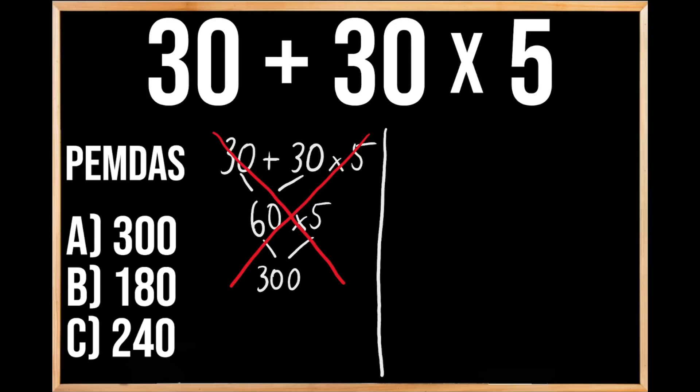So our problem was 30 plus 30 times 5. Now since we have multiple operations within this problem, we need to make sure that we're following the order of operations here. And over on the left-hand side, we can see the acronym PEMDAS, which stands for the order of priorities when solving problems just like this. The P in PEMDAS stands for parentheses, and the E stands for exponents. And since we don't have either one of those, we're going to move on to our next priority of multiplication or division.